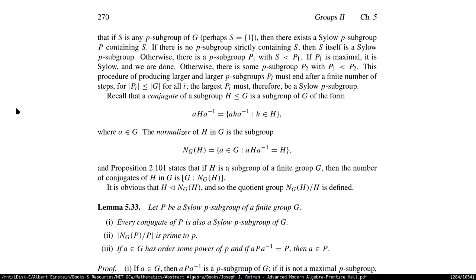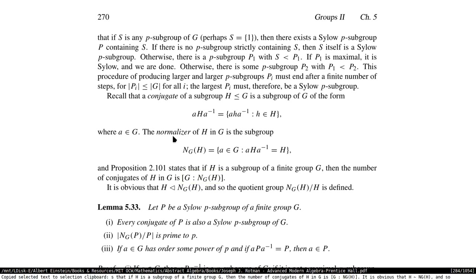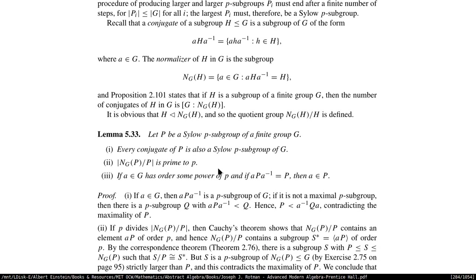We know about the conjugate, the normalizer, and the centralizer. From the index of the normal subgroup — the normalizer — if you're taking the normalizer of a finite subgroup, then the number of conjugates of the subgroup is going to be the index of the normalizer. We saw the class formula in our first lecture on group actions. If H is a normal subgroup of the normalizer, then the quotient of the normalizer with H is going to be well-defined because it's a normal subgroup.